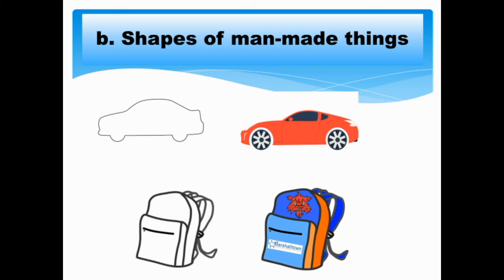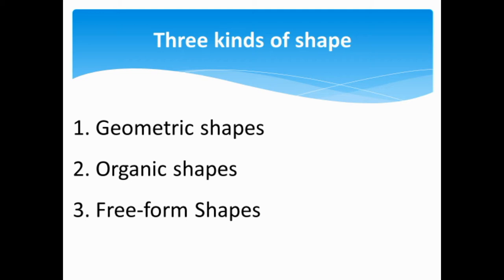Now let's proceed with the three kinds of shape. Number one, geometric shapes. Number two, organic shapes. Number three, free-form shapes.